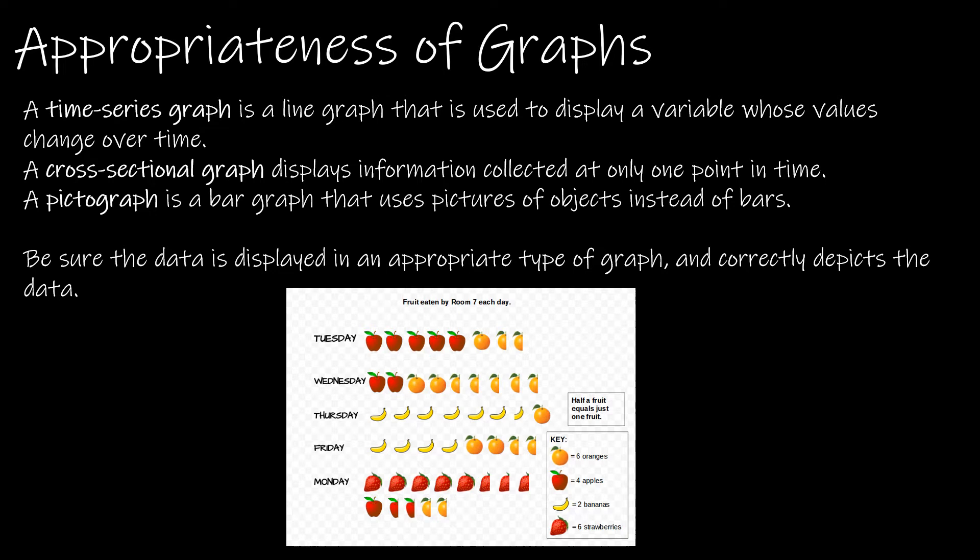But this particular pictograph is very misleading. And here's why. If you'll notice on the key, I have different shapes representing different things. So one orange means six oranges, but one apple means four apples.